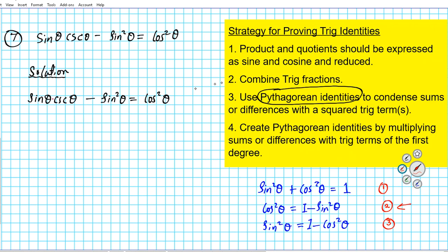To do that we're going to look at step number one, which we've used for examples one through six. When you have the product of two trig functions that you want to simplify, an easy way to carry out the simplification is by expressing them in terms of sine and cosine only. If you do that it's easy to see common trig factors that can be cancelled out.